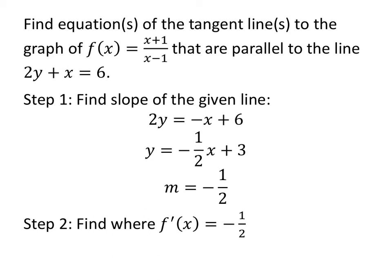Now let's find the equations of the tangent lines to the graph of f(x) equals x plus 1 over x minus 1 that are parallel to the line 2y plus x equals 6. First, find the slope of the given line: subtract x, divide everything by 2, giving slope m equals negative one half. We care because equations of tangent lines have slopes equal to the derivative of the function. If the tangent line is parallel to this line, then the derivative of my function must equal negative one half.